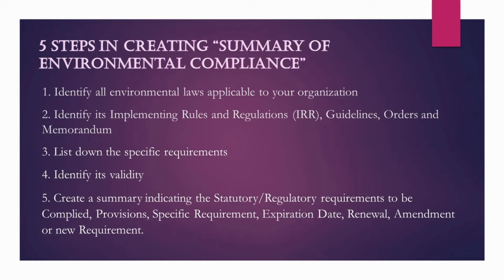Third, list down the specific requirements. For example, the Hazardous Waste Generator's ID or HGID under RA 6969, the discharge permit under RA 9275, the permit to operate under RA 8749, the chemical control order or CCO under RA 6969, and so on. The fourth step is to identify the validity of the documents, such as the expiration date, or if the certificate has no expiration.